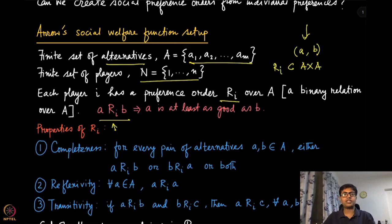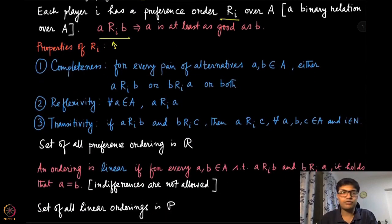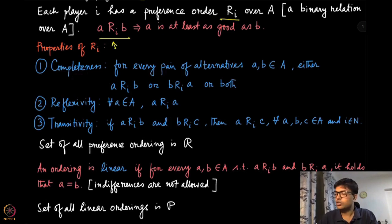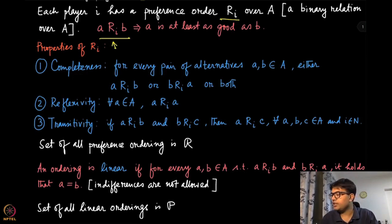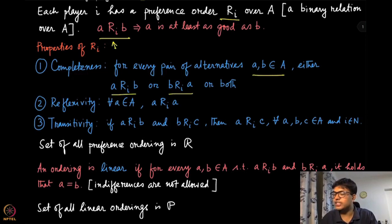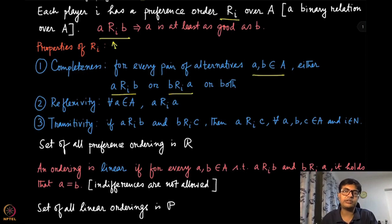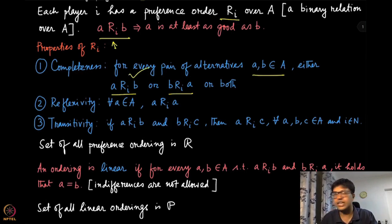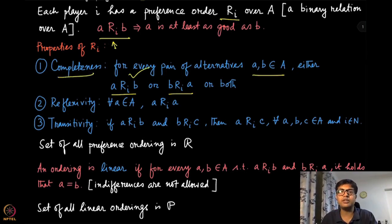We are going to put certain restrictions or properties on this preference order Ri. The first property is completeness: for every pair of alternatives A and B in set A, either A should be at least as preferred as B, or B should be at least as preferred as A, or both. It will never be the case that you cannot compare two alternatives. That is why it is called completeness — you always have some preference ordering among any pair of alternatives in A.